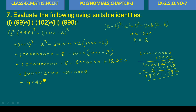So, 998 to the power whole cube — we wrote this as (1000 minus 2) to the power whole cube. The identity we used is (a minus b) whole cube equals a cube minus b cube minus 3ab into (a minus b), where a equals 1000 and b equals 2. Solving this gives us the final answer: 994,011,992.